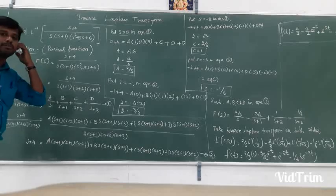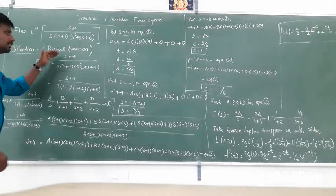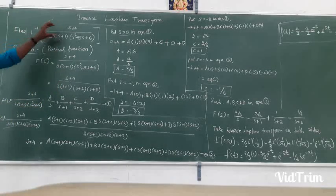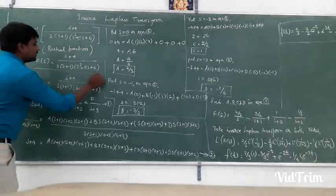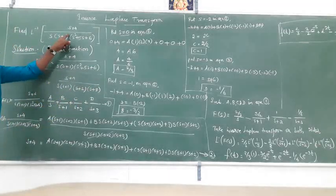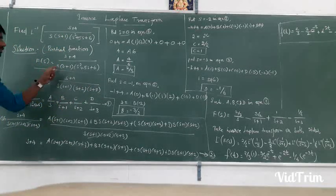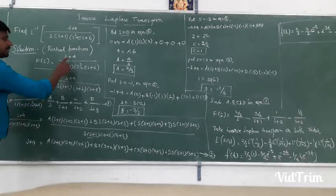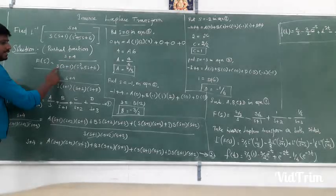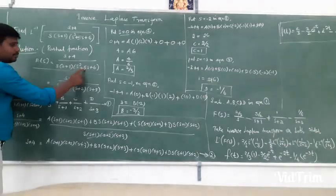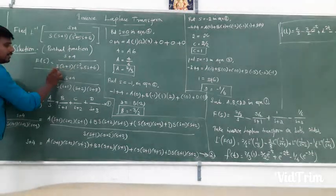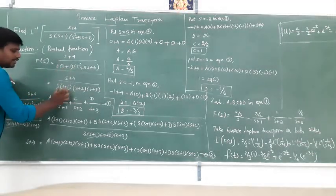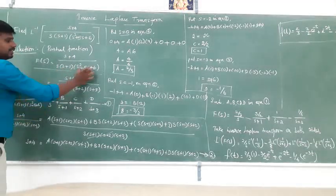We will solve the problem. First, we will use F(s). F(s) is the question. The expression is: S plus 4, divided by S into S plus 1 into S squared plus 5S plus 6. In this equation, this term is the question.